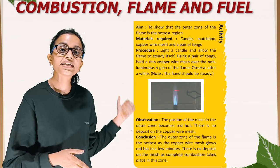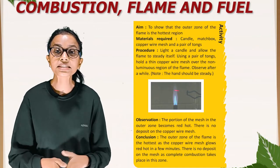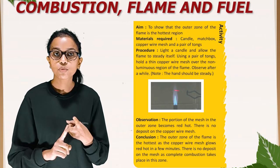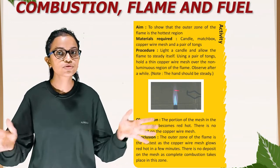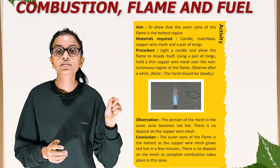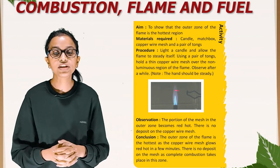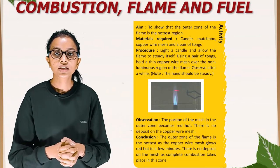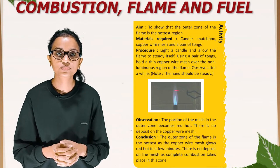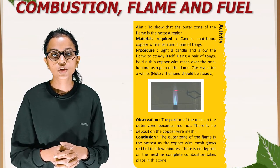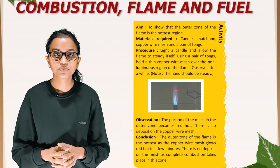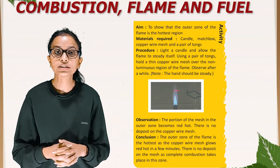Activity: to show that the outer zone of the flame is the hottest region. Materials required: candle, matchbox, copper wire mesh, and a pair of tongs. Procedure: Light a candle and allow the flame to steady itself. Using a pair of tongs, hold a thin copper wire mesh over the non-luminous region of the flame and observe after a while. Note: hand should be steady. Observation: The portion of the mesh in the outer zone becomes red hot, and there is no deposit on the copper wire mesh. Conclusion: The outer zone of the flame is the hottest, as the copper wire mesh glows red hot in a few minutes. There is no deposit on the mesh as complete combustion takes place in this zone.